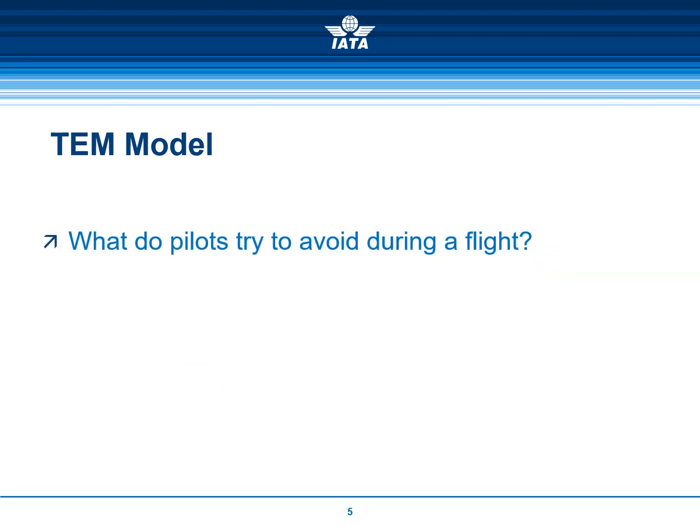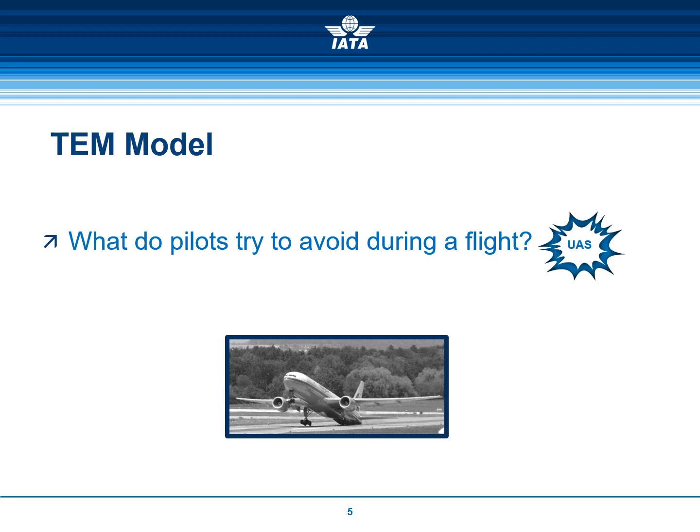What do pilots try to avoid during a flight? UAS. Undesired aircraft states are characterized by divergences from parameters normally experienced during operations — for example, aircraft position or speed deviations, misapplication of flight controls, or incorrect systems configuration associated with a reduction in margins of safety. The guidance for analysts does not contain a list of UAS, as it is impossible to provide an exhaustive list of all potential UAS.